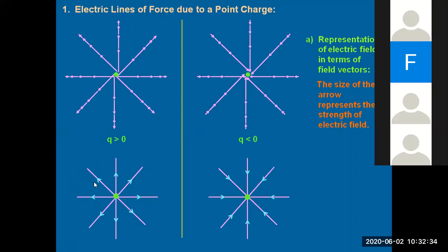To keep in mind: if the charge is greater than zero (positive), the arrow mark should be outwards; if the charge is negative (less than zero), the arrow mark should be inwards. That is what you have to note.